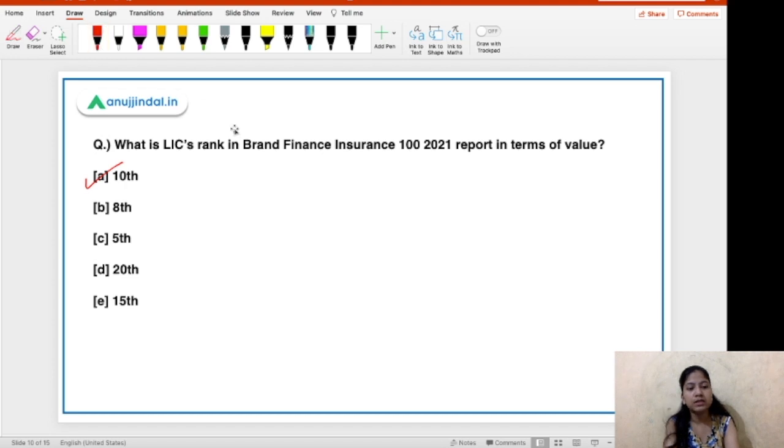So, let us discuss the ranking first and then we will be discussing the details of this report. So, you have five rankings right in front of you. Out of these rankings, India's rank or basically LIC that is representing India on this list is 10th. Option A is the right answer. Now, this list, Brand Finance Insurance 100 2021 list is released by Brand Finance.